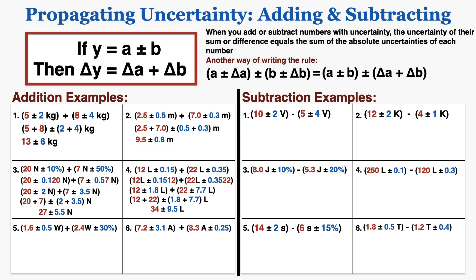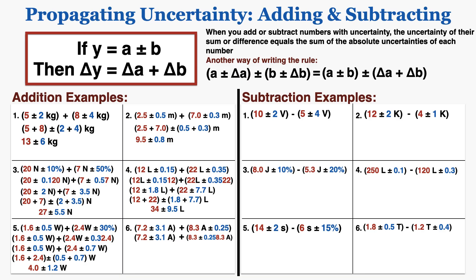In number 5, I have a mixed problem where one number has an absolute uncertainty and another has a percent uncertainty. So I keep the absolute uncertainty the same and convert the percent uncertainty to absolute uncertainty, then add the absolute uncertainties together to get my answer. Number 6 is similar — I have an absolute uncertainty and a fractional uncertainty, so I only convert the fractional uncertainty to absolute, and then add the two absolute uncertainties together for my result.